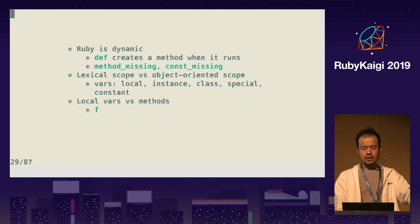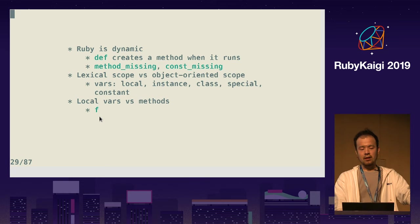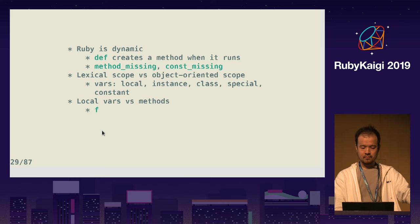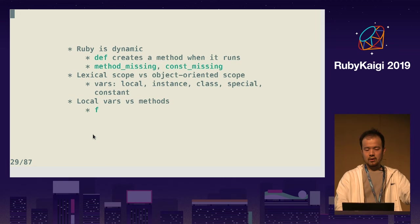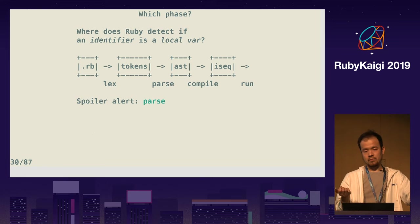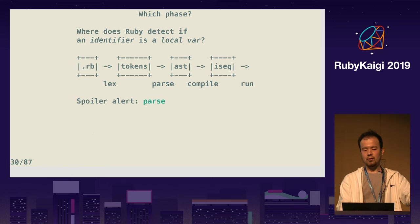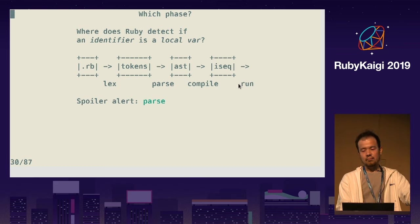I think Matz carefully designed Ruby to be indistinguishable between local variable and method. Like when you see `f`, you cannot tell if f is a local variable or a method. So where does Ruby determine f to be a local variable? An identifier — Ruby identifies the name f to be a local variable at parsing time, not compile time or runtime. Most things happen at runtime, but this is an exception.